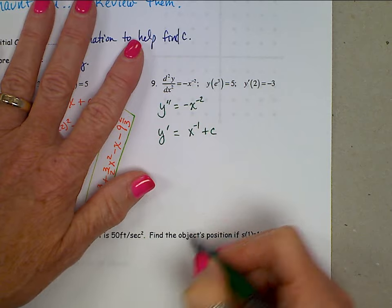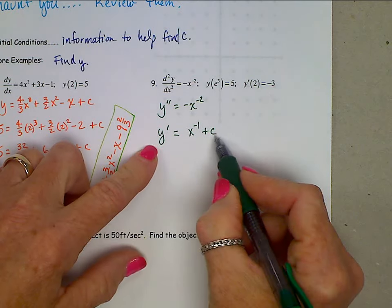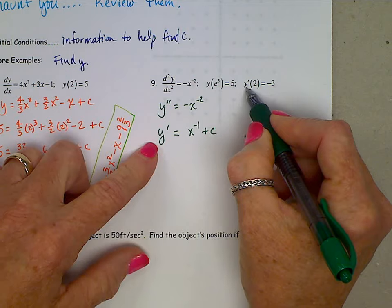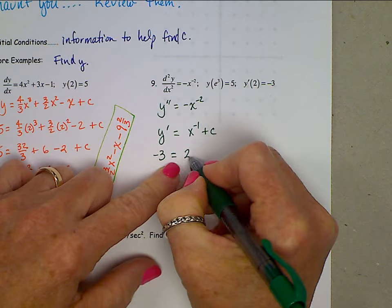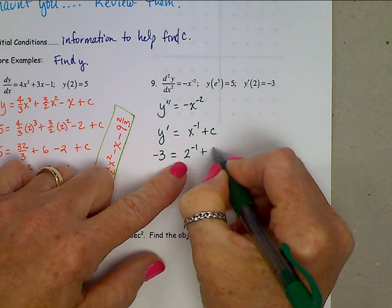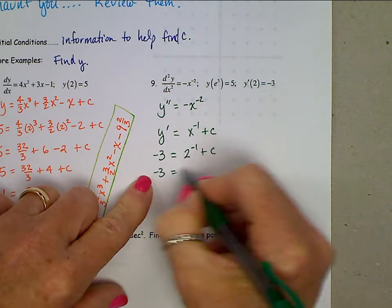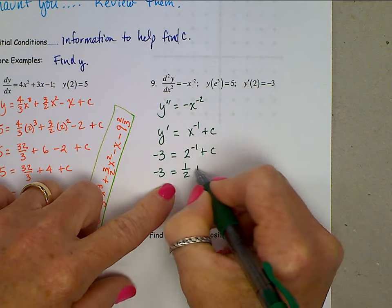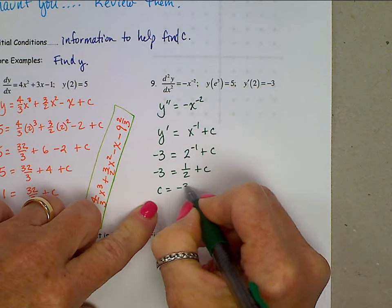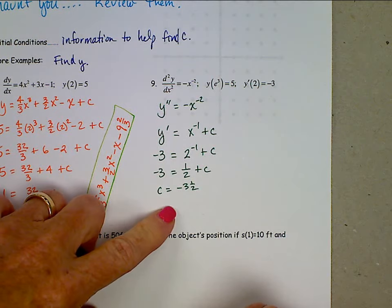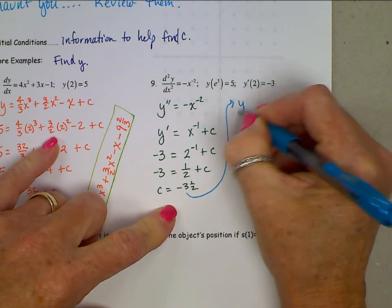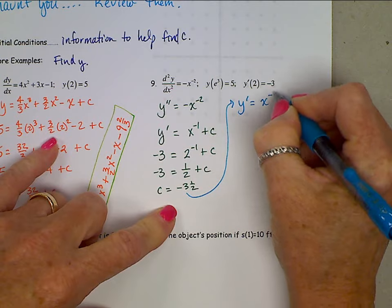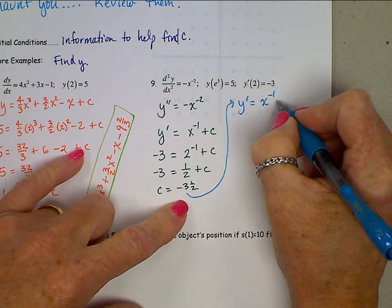At this point, figure out what that c is right away, and we can use this piece of information. y prime at 2 is negative 3, so we have negative 3 is 2 to the negative 1 plus a c. 2 to the negative 1 is a half, so c is negative 3 and a half. We can take that information and come up here then, and we have y prime now is x to the negative 1 minus 3 and a half.